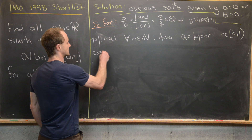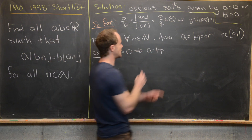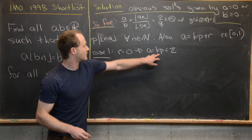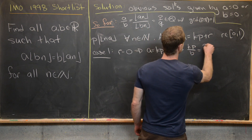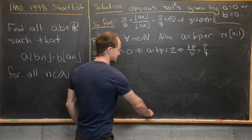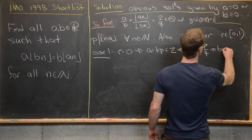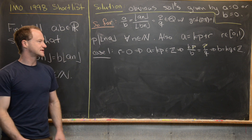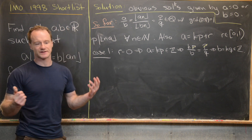Case 1: R equals zero. Then A equals K·P, which is an integer. Plugging back in, K·P over B equals P over Q. Canceling P from both sides and cross-multiplying gives B equals K·Q, which is also an integer. So this yields the family of solutions where A and B are both integers — which makes sense, since the floor of an integer doesn't change it.